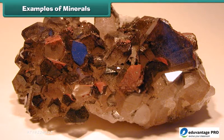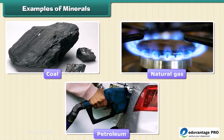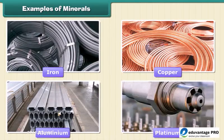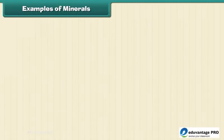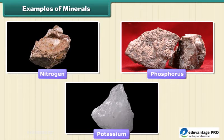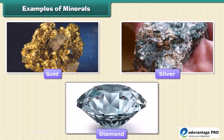Minerals are very important to humankind. Some minerals are used as fuels — for example, coal, natural gas, and petroleum. Some are used in industries, like iron, copper, aluminium, platinum, etc. Minerals like gold and lithium are used in medicines. Nitrogen, phosphorus, and potassium are used in fertilizers. Gold, silver, and diamond are used in jewelry.